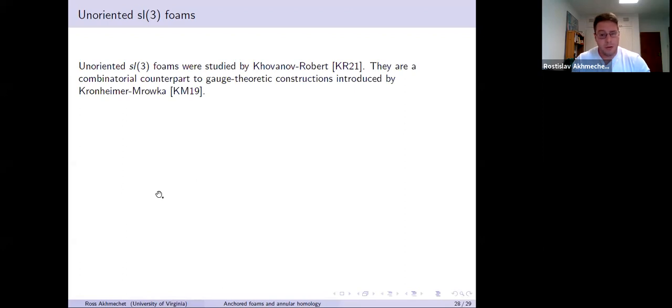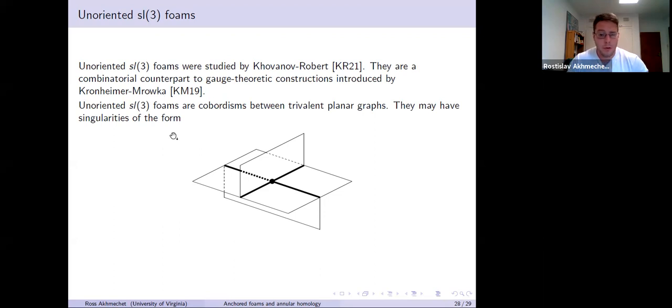That's all I'll say about the oriented SL3 foams and the link homology. I want to end with just one word about the unoriented foams. These were introduced by Khovanov and Robert, and they're combinatorial versions of gauge theoretic constructions which Kronheimer and Mrowka introduced, and they're related to graph colorings. Unoriented SL3 foams are also, one thinks about them as cobordisms between now unoriented tri-valent planar graphs, and you allow additional singularities. We also discuss these unoriented story in our paper, but the unoriented story in general is like, even state spaces cannot be identified even in the non-anchored setting. One can't necessarily reduce state spaces recursively using these local isomorphisms.